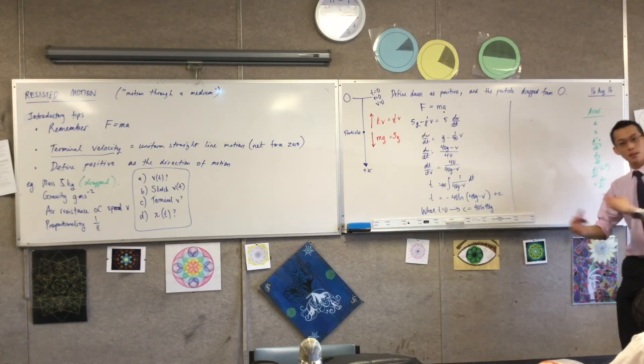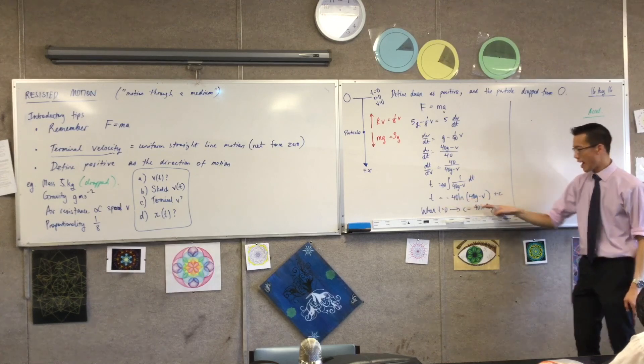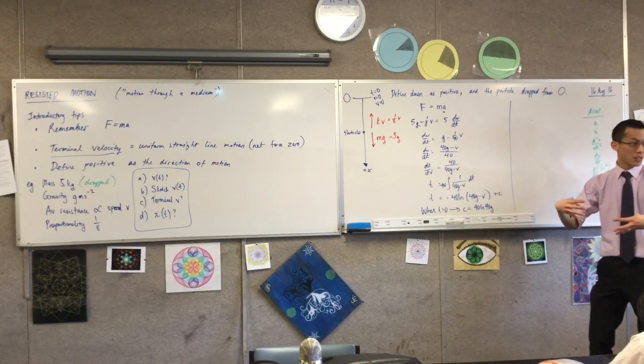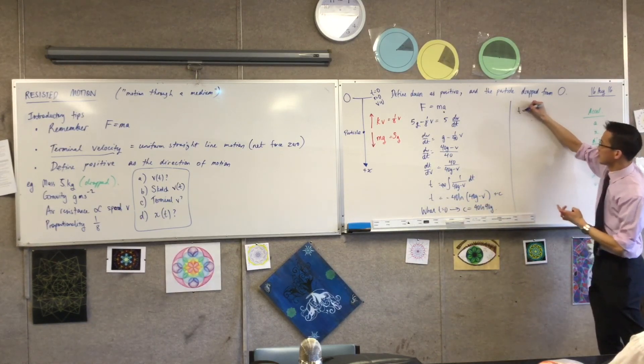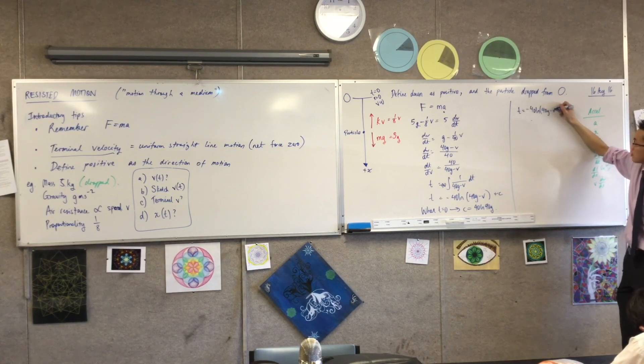Okay, so now I'm going to substitute this in, noting I've got a log, this is negative by the way, and another log. I can put these together into a single log, right? So I'm going to say t equals, I'll do the substitution first, and then I'll combine my logs.